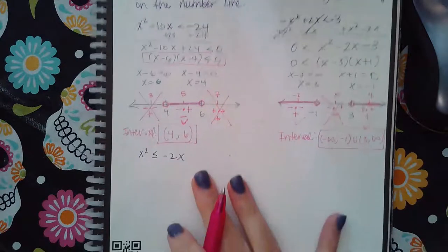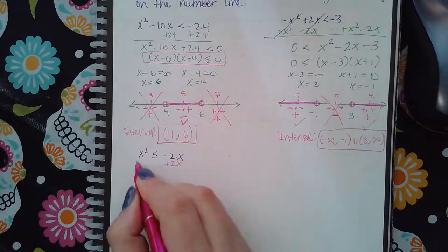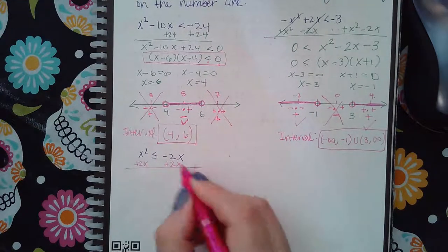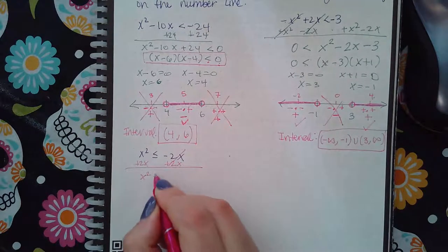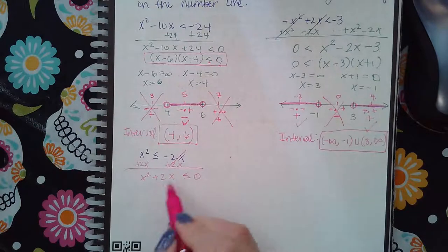Okay, last one. So we do have a positive x squared here, so I'm actually going to add 2x to both sides. So then I get x squared plus 2x less than or equal to zero.